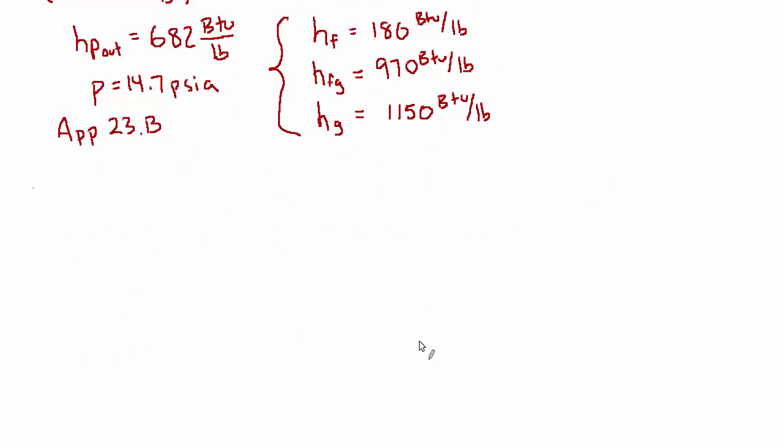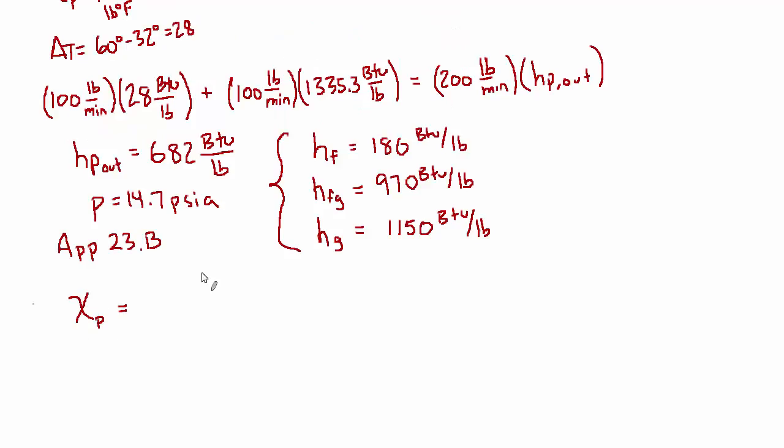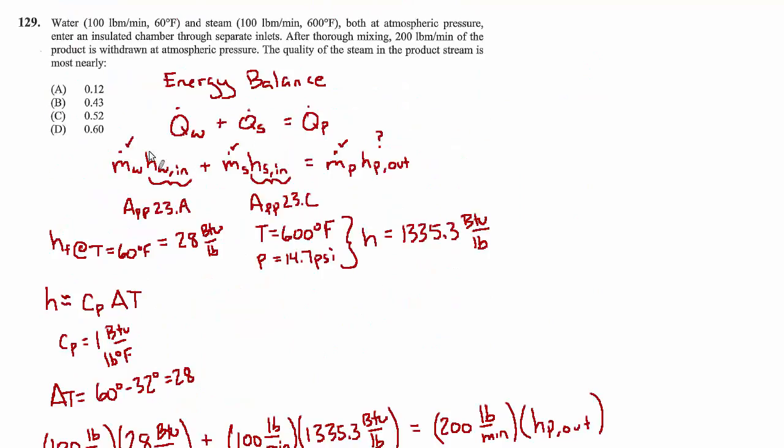To actually solve for that quality of the products, we'll need to find the difference between what we have, 682, and the bottom end, 180, divided by the difference between the two. So there's two ways you can do this: you can do 1150 minus 180, or you can just realize that 970 is that difference and just divide by that. Solving that, we get 0.517, so indeed the quality is just north of 50 percent. One of the answer choices is 0.52, so that's perfect.